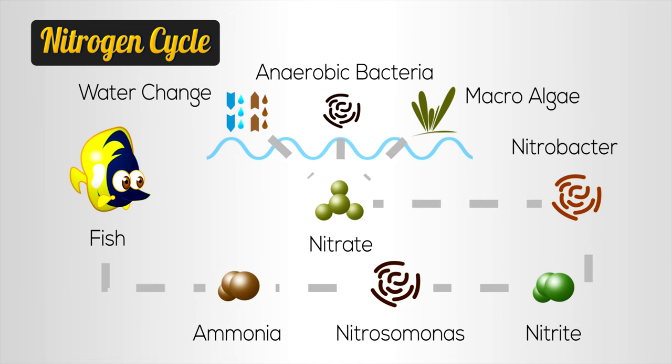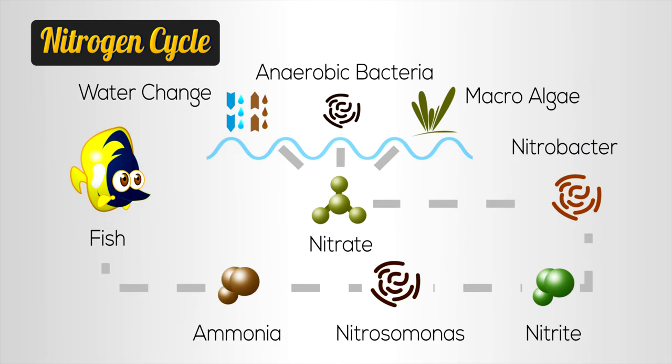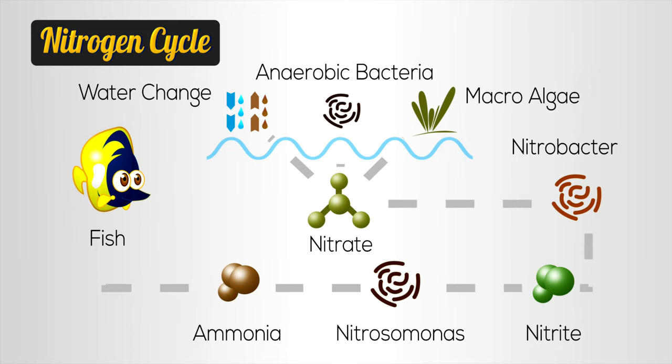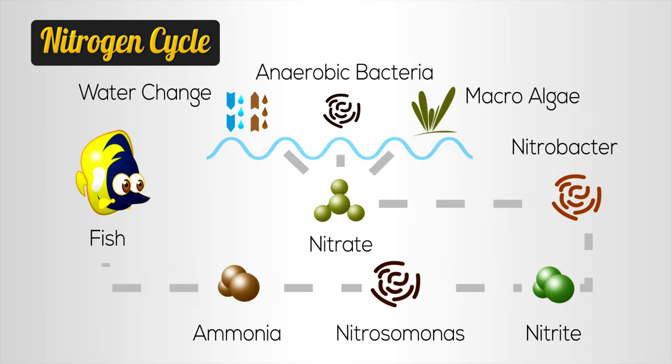A shallow sand bed isn't deep enough to have anaerobic areas. There are aerobic and anaerobic bacteria: aerobic bacteria use oxygen and are found near the top of a sand bed or the exterior of rock, converting ammonia to nitrite and nitrite to nitrate. That last step — converting nitrate to nitrogen gas — requires anaerobic bacteria, found deep inside live rock or below four inches in a deep sand bed. A deep sand bed, if done correctly, has both aerobic and anaerobic spaces, but you must be careful of dangerous gas pockets that can form. You need sand sifters, snails, starfish, and similar critters to gently move through the sand and release those gas pockets before they become a problem.